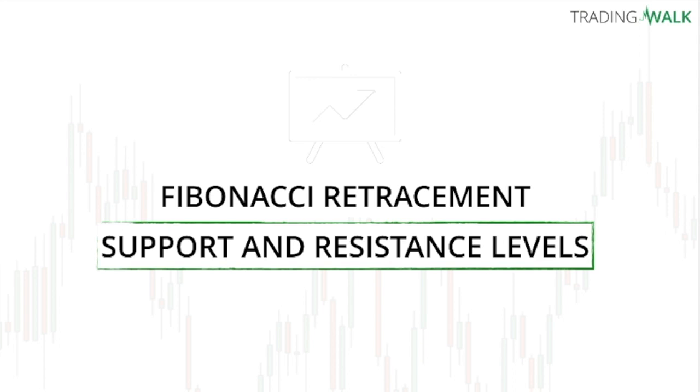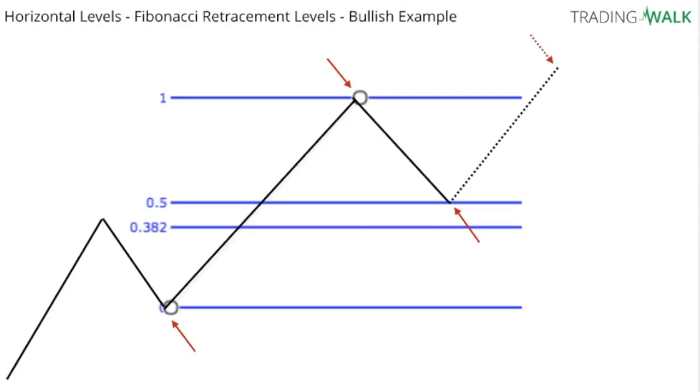But let's look at the most powerful Fibonacci retracement levels. The most powerful Fibonacci retracement levels are the 61.8%, the 50%, and the 38.2% level. In this example you can see that the numbers are 1, 0.5, 0.382, and 0, but basically what you're looking for...